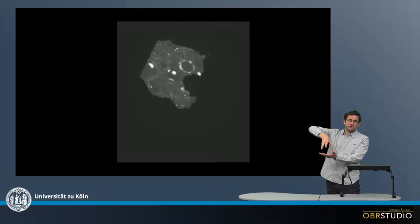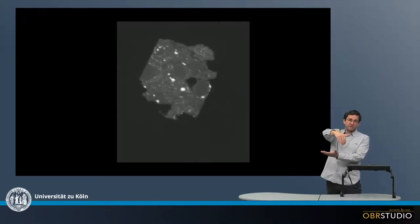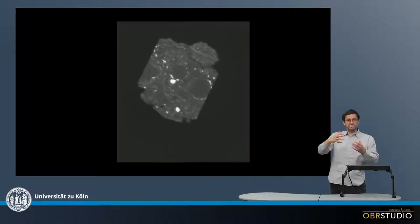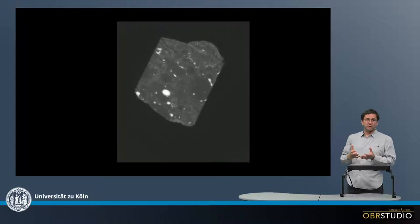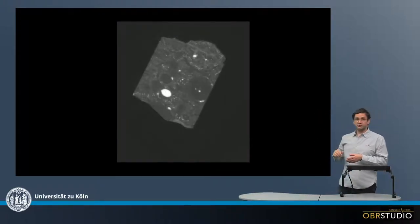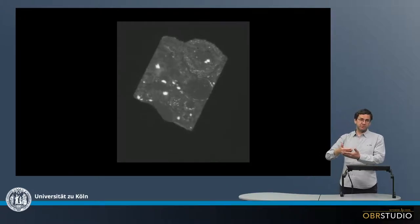Then the sample is turned on this turning table 360 degrees and we take about 3,000 to 4,000 individual images. From these images, you can reconstruct a 3D image of the meteorite. This is what is shown in this movie. You basically move through the image stack that has been produced here.